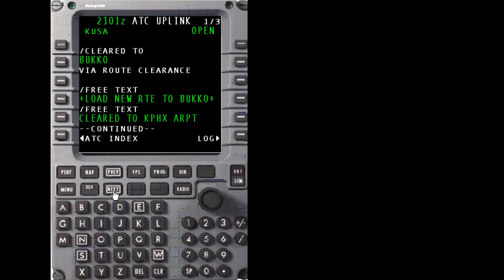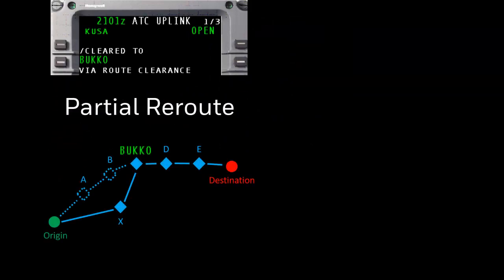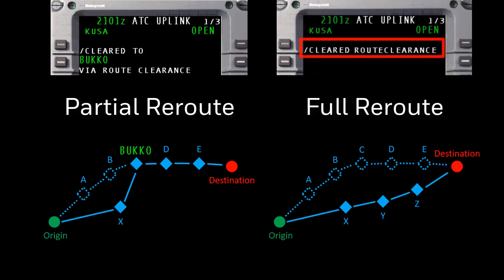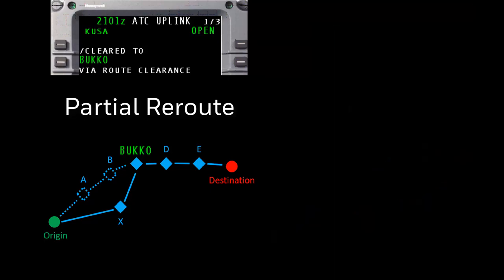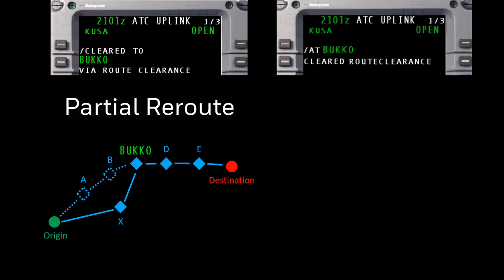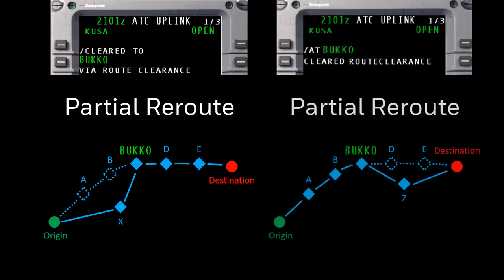This example just shown was an example of a partial reroute. However, if ATC issues a full reroute, the message element would say cleared route clearance. With a full reroute, all fixes prior to the destination airport will be deleted and replaced by other fixes when we apply or push-to-load the full reroute. The methodology of reviewing, applying, and accepting or rejecting a full reroute remains the same as the previous partial reroute example. There is a third reroute uplink message that is not currently in use at the time of this recording, but may be in use in the future. This uplink message, at BUCKO, cleared route clearance, is used to uplink a partial reroute after the fix listed in the message element. In this case, ATC is modifying the routing after BUCKO. The methodology of applying this type of message is the same as in the previous example.